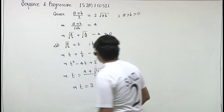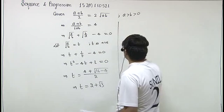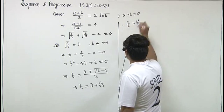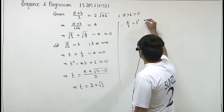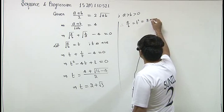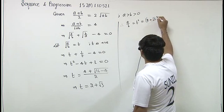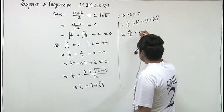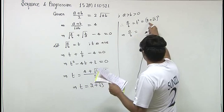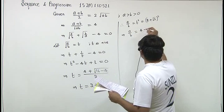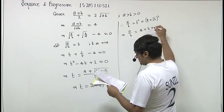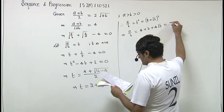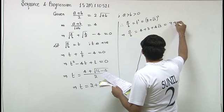Now T is root of A by B. A upon B will be T square. That is 2 plus root 3 squared, this will be 4 plus 3 plus 4 root 3, that is 7 plus 4 root 3.